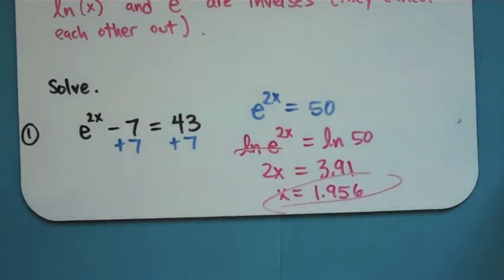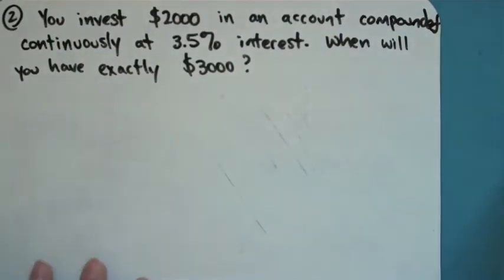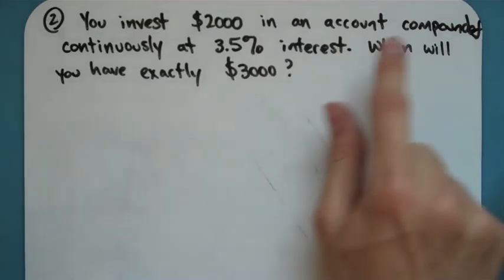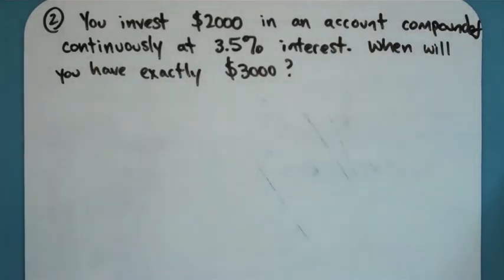One more example. Going back to our continuously compounded interest formula. We actually did a very similar problem in the previous video where I asked you when the money would double, I think. Here I say I want to have exactly $3,000 in account compounded continuously.